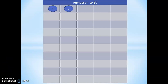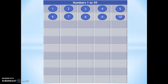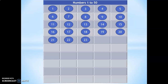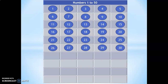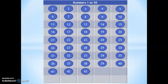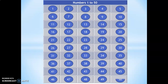1, 2, 3, 4, 5, 6, 7, 8, 9, 10, 11, 12, 13, 14, 15, 16, 17, 18, 19, 20, 21, 22, 23, 24, 25, 26, 27, 28, 29, 30, 31, 32, 33, 34, 35, 36, 37, 38, 39, 40, 41, 42, 43, 44, 45, 46, 47, 48, 49, 50. That was great.